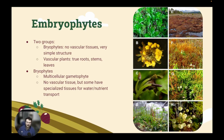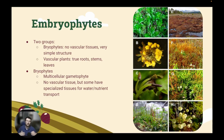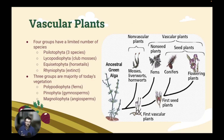For the vascular plants, they do have true roots as well as stems and leaves. Between the bryophytes and the vascular plants is basically when plants evolved for life on land — they started to produce specialized structures to help them fight gravity and store water and nutrients. Within our vascular plants, we have a lot of different groups: the Psilotophyta, the Lycopodiophyta, the Equisetophyta, the Rhyniophyta, and then three groups that make up the majority of our vegetation today.